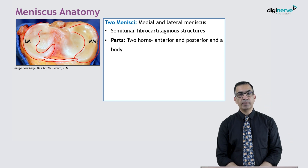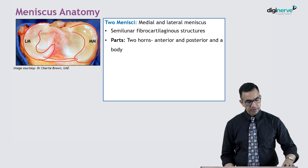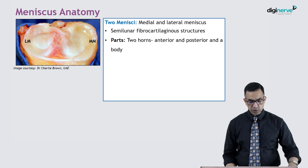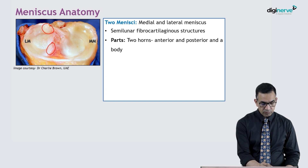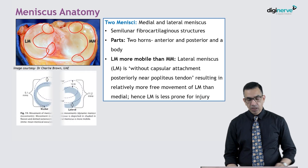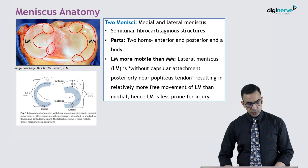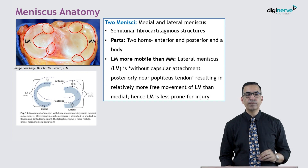Both menisci are joined together anteriorly by the inter-meniscal ligament. They are semi-lunar fibrocartilaginous structures in the knee. As far as parts are concerned, there are two parts: the anterior horn, posterior horn, and the rest is the body of the meniscus. Similarly, there is a posterior root, anterior root, and the body.